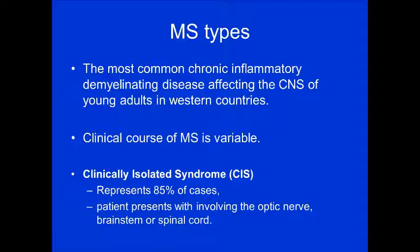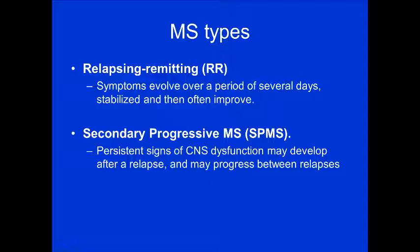Multiple sclerosis is the most common chronic inflammatory demyelinating disease that affects the central nervous system of young adults in Western countries. MS has a variable course. The clinically isolated syndrome, or CIS, represents approximately 85% of cases — patients usually present with optic nerve involvement, brainstem, or spinal cord involvement. The relapsing-remitting type is probably the most familiar: symptoms evolve over several days, stabilize, and often improve.